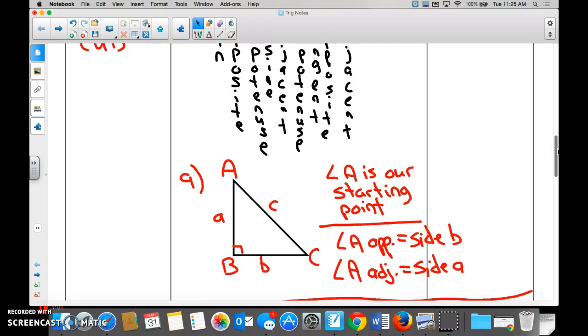Alright. Number nine. If angle A is our starting point, what is opposite angle A? Everybody. Side B, right? What is adjacent to angle A? Side A. And then what is the hypotenuse for any of the three angles? C is the hypotenuse. Okay?